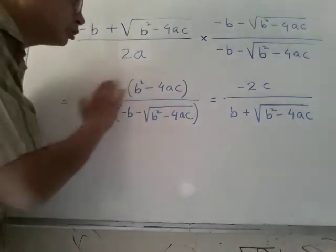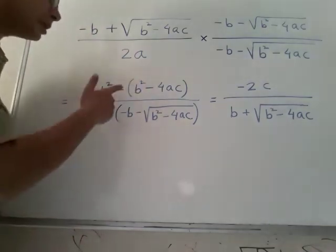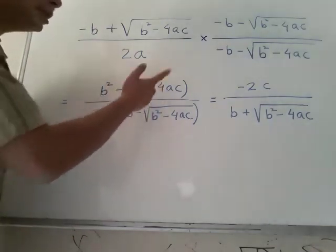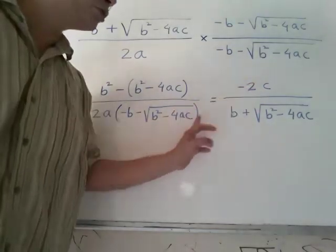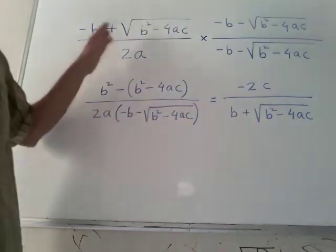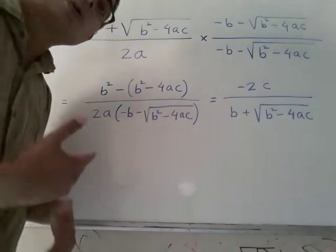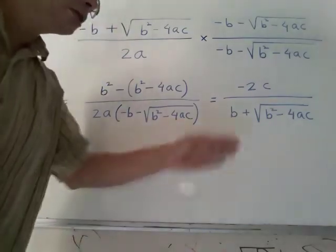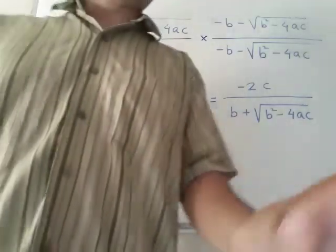And they just nicely knock off each other and it becomes 4ac which cancels partly with this 2a giving me this: minus 2c by this. So theoretically this quantity and this quantity are just the same. But when we want to compute it using a computer, this is much more precise.